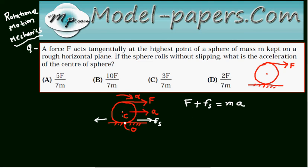The total torque acting about the center C is F times R, where R is the radius of the sphere. The capital force F produces a torque F times R in the clockwise direction. Similarly, the frictional force F_s produces a torque in the anticlockwise direction, F_s times R. This is the net torque acting on the sphere.